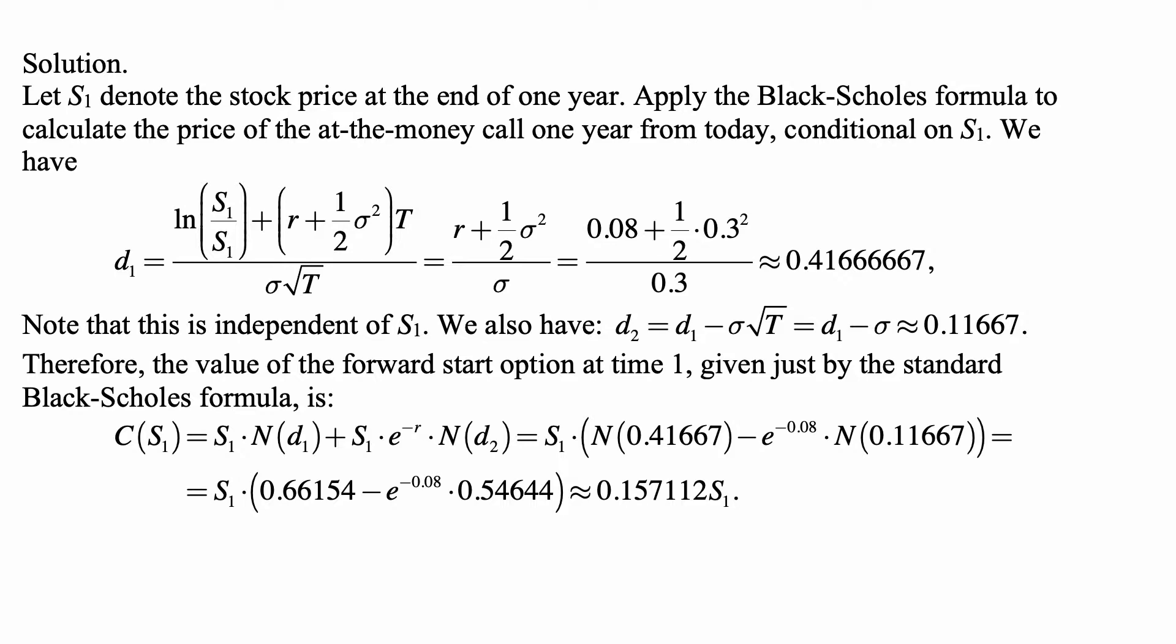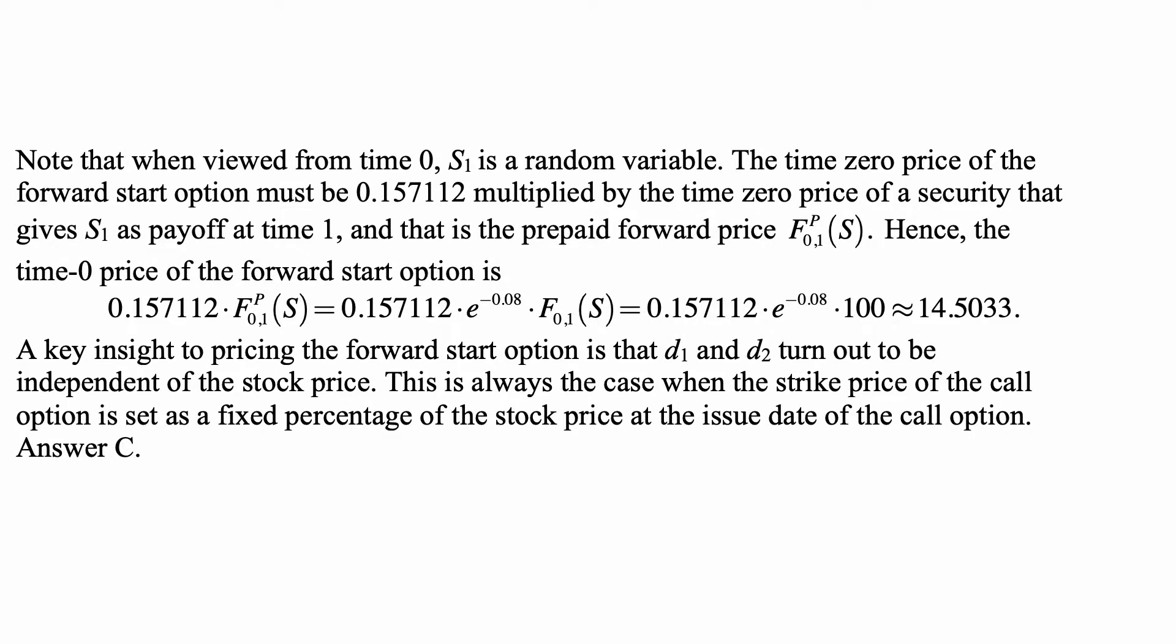Note that when viewed from time zero, S1 is a random variable. The time zero price of the forward start option must be 0.157112 multiplied by the time zero price of a security that gives S1 as the payoff at time one, and that actually is the prepaid forward price at time zero for delivery at time one. The value of that security at time one will be S1, and hence the time zero price of the forward start option is simply 0.157112 times the prepaid forward price.